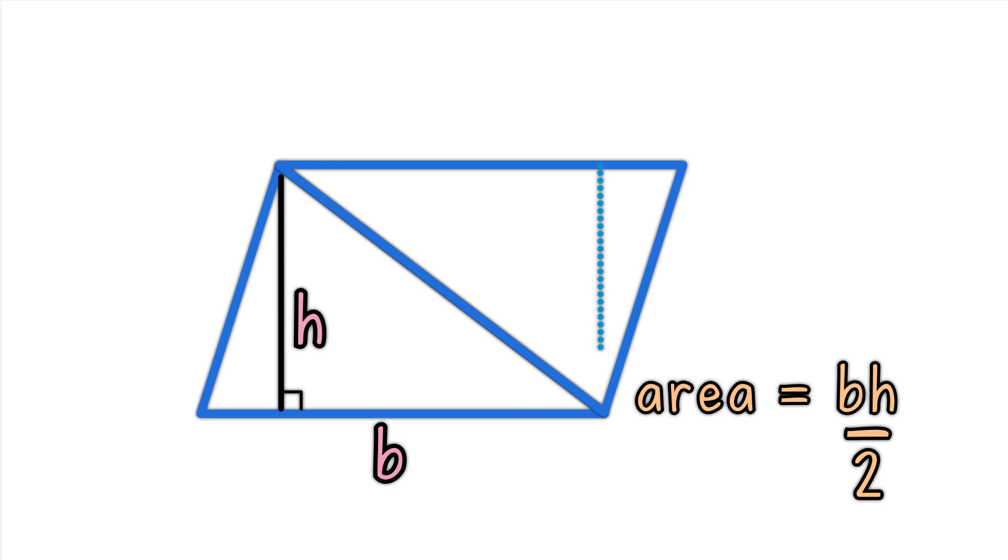You can see that by slicing the new triangle and moving the sliced part to the other side, you get a simple rectangle, whose area is BH.